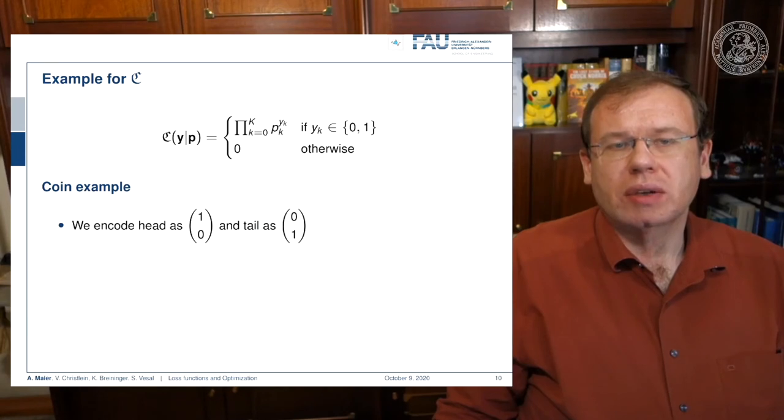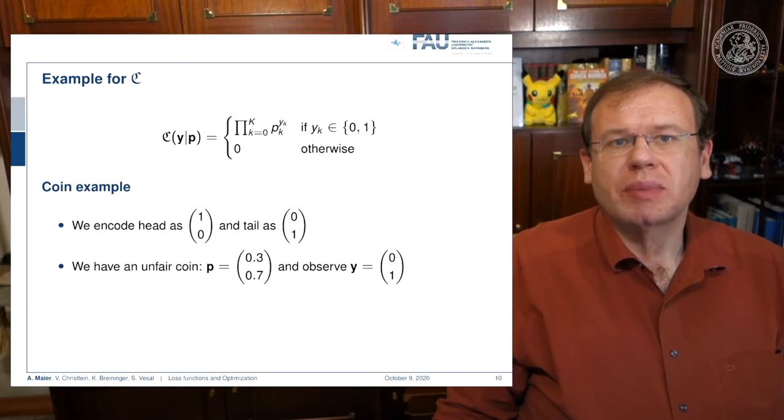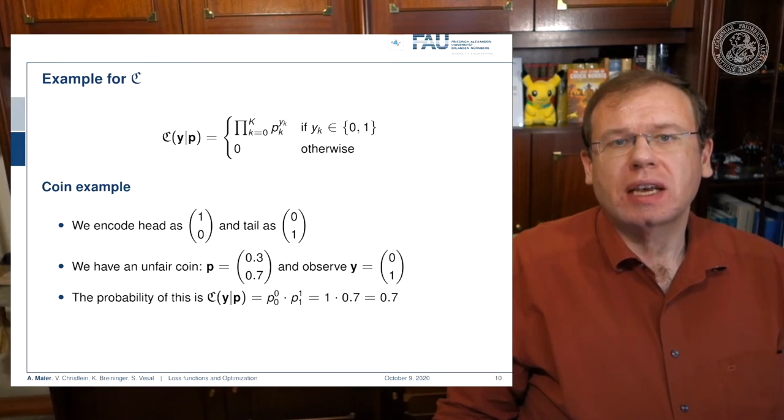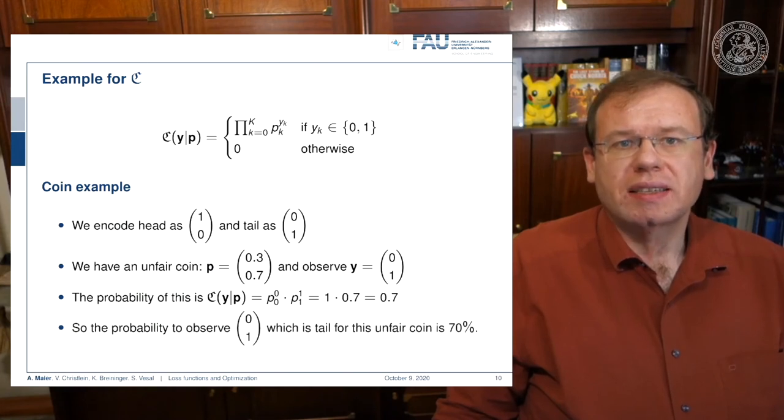Let's look at an example of a categorical distribution: a Bernoulli trial, a coin flip. We encode heads as 0,1 and tails as 1,0. We have an unfair coin that prefers tails with probability 0.7 and heads with 0.3. We observe the true label Y as tails. Now we can use the above equation and plug those observations in. We get 0.3 to the power of 0 and 0.7 to the power of 1. Something to the power of 0 always equals 1, then 0.7 to the power of 1 is 0.7. This means the probability to observe tails for our unfair coin is 70%.